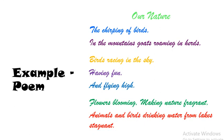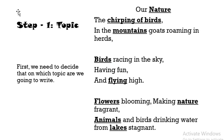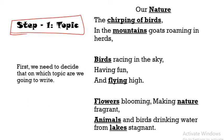Now let's see the four steps to write a poem. The first step is the topic. You all need to understand the topic and decide on which topic you are going to write. For example, in this poem, the topic was nature. You can see all the lines — the chirping of birds, mountains, birds flying, flowers, nature, animals, lakes — all these words are related to nature. That way you need to find one topic on which you will write.